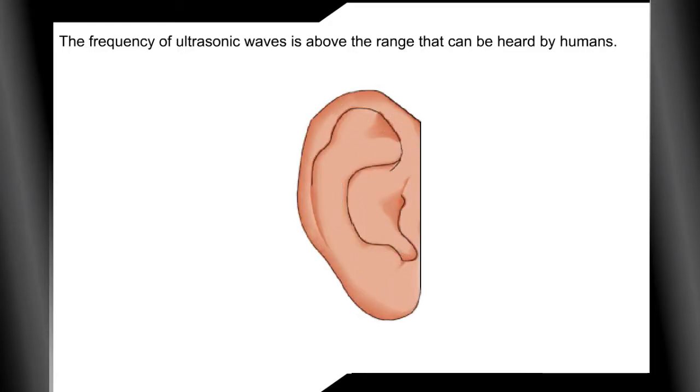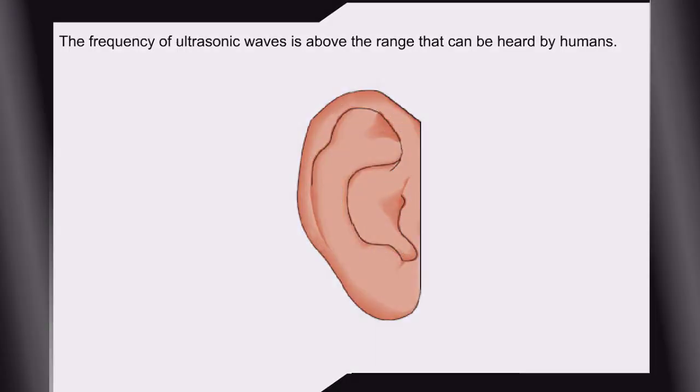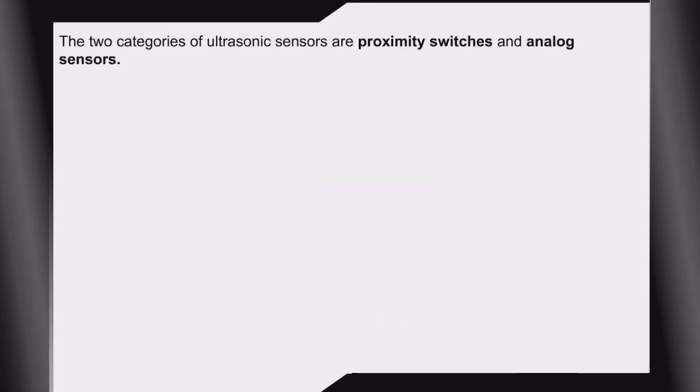The frequency of ultrasonic waves is above the range that can be heard by humans. The two categories of ultrasonic sensors are proximity switches and analog sensors.